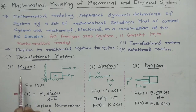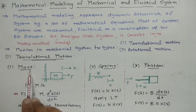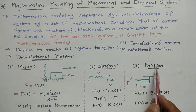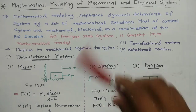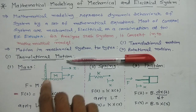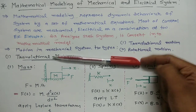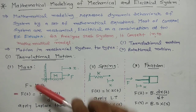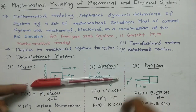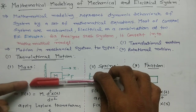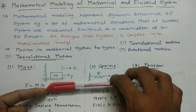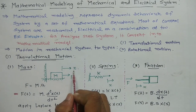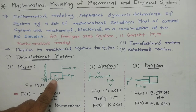For translational motion, we will discuss three objects: mass, spring, and friction. First, we discuss mass. If we have an object with mass m placed on a surface and we apply a force in one direction, it will move from one place to another — it changes its position. That change in position is called displacement, denoted by x.